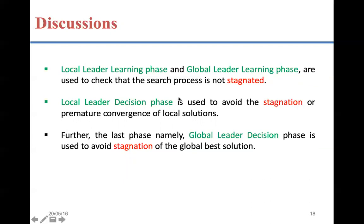If the global leader is stuck, it triggers the fission and fusion process. So in any case — whether it is the local leader or global leader — if they are stagnated, they will come out of it. There are very few chances that this algorithm gets stuck at a local optimum, and therefore this algorithm works better to obtain the global optimum compared to PSO, ABC, or DE.